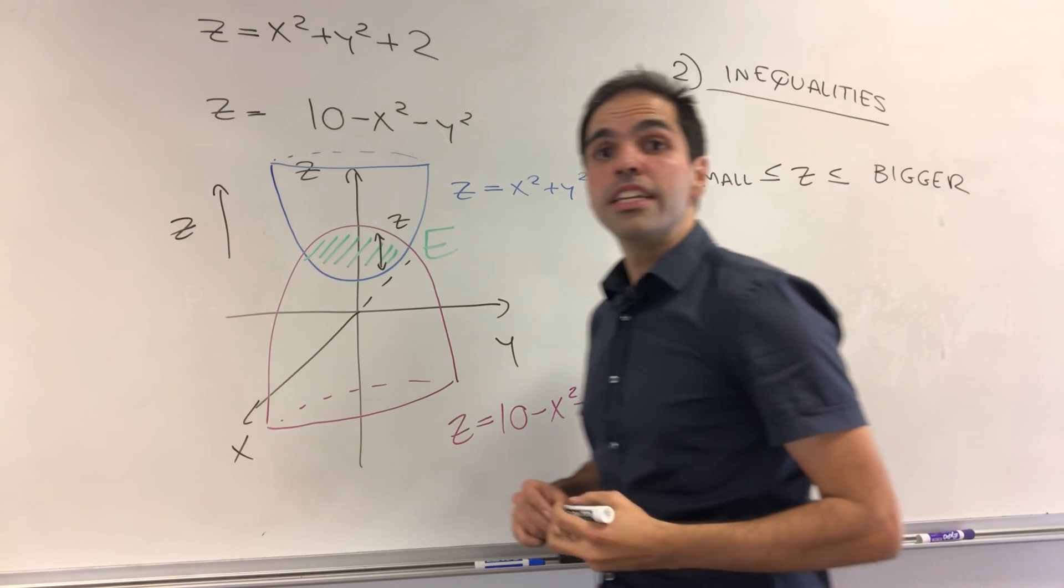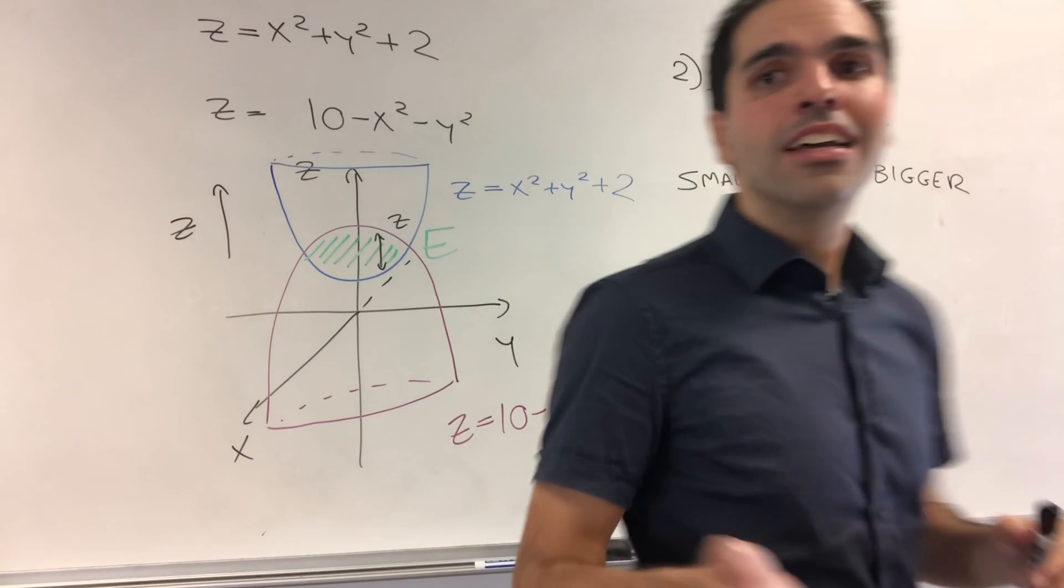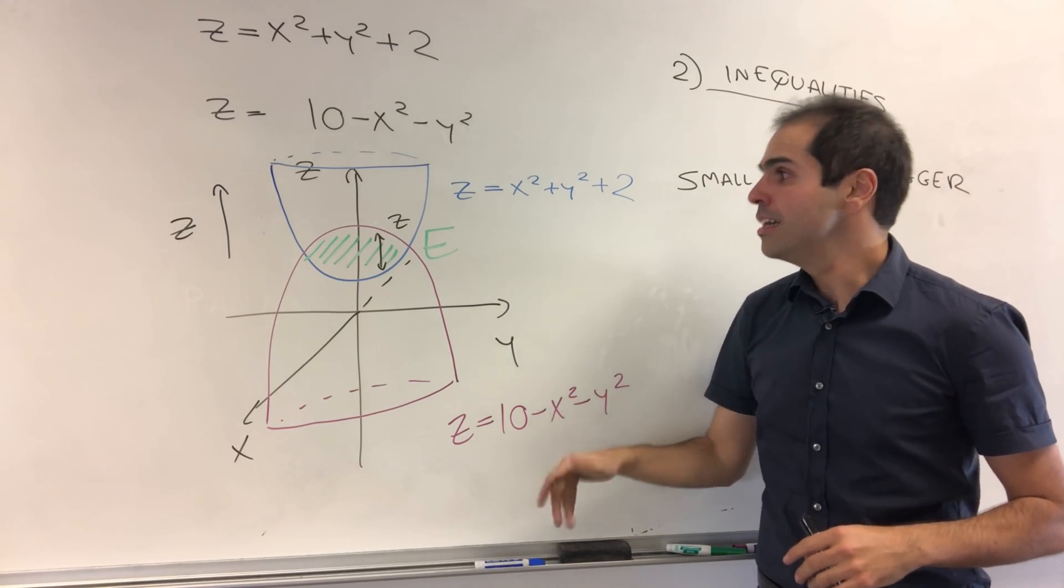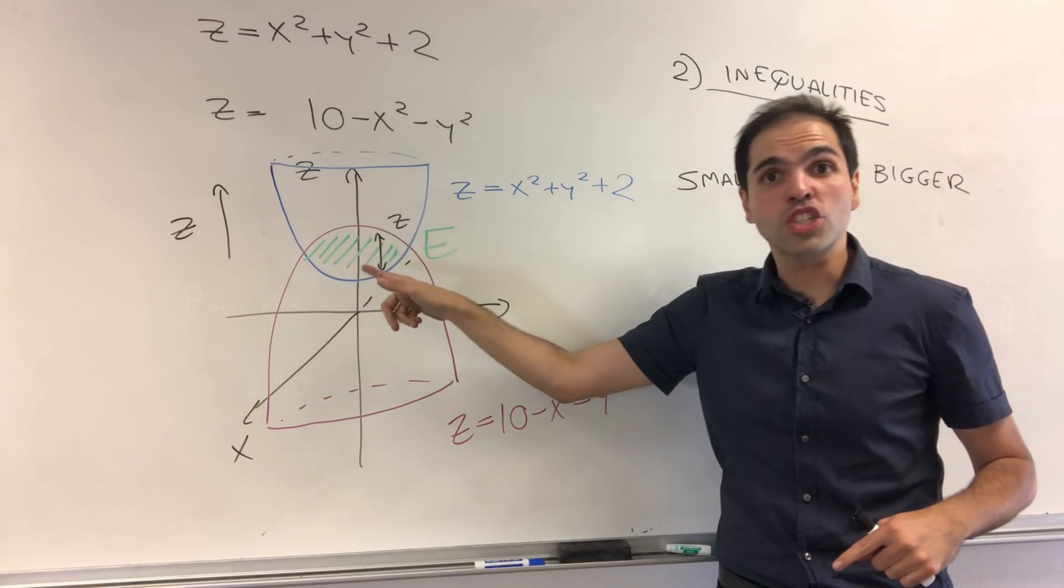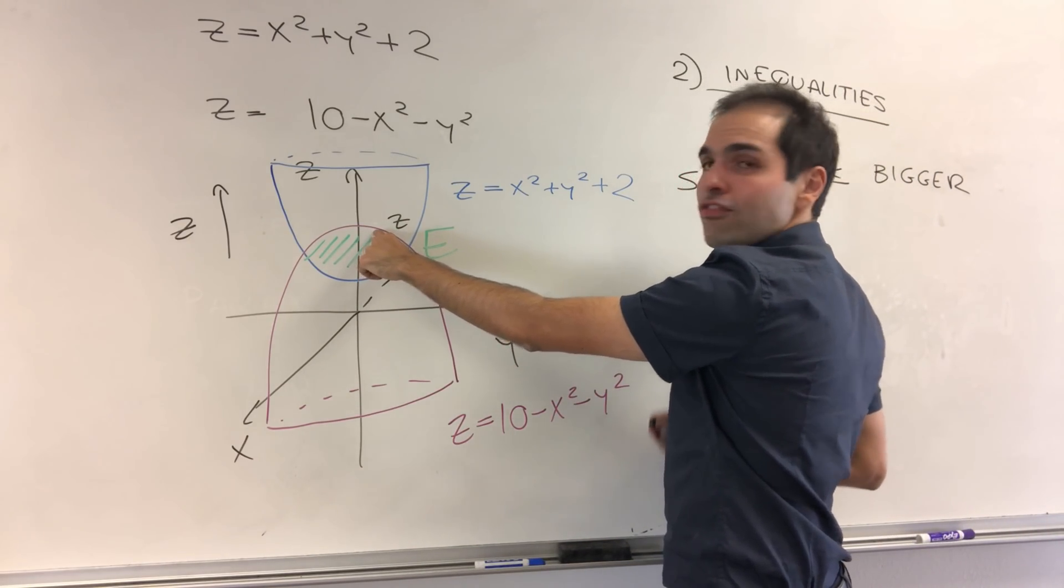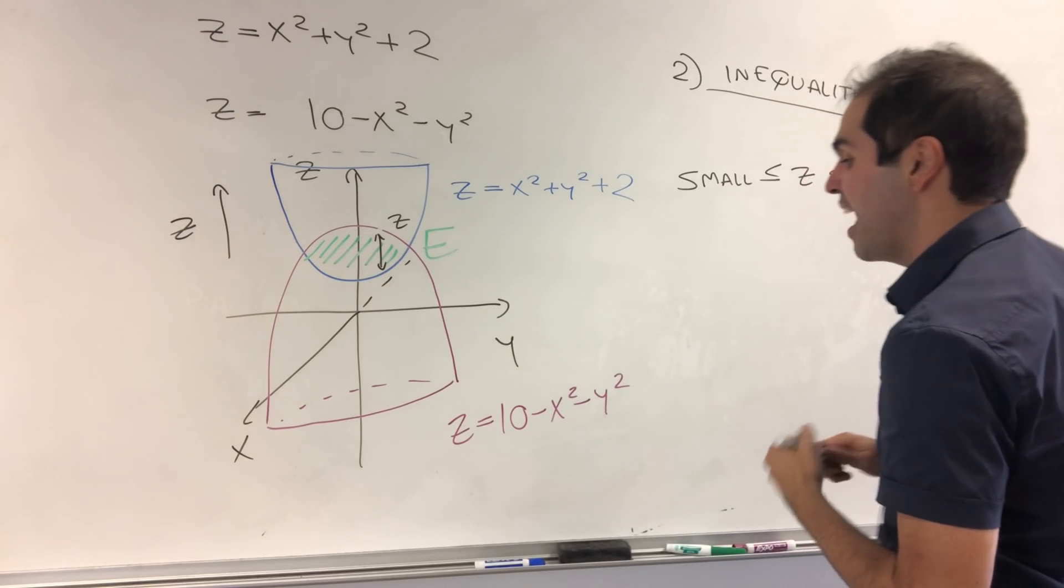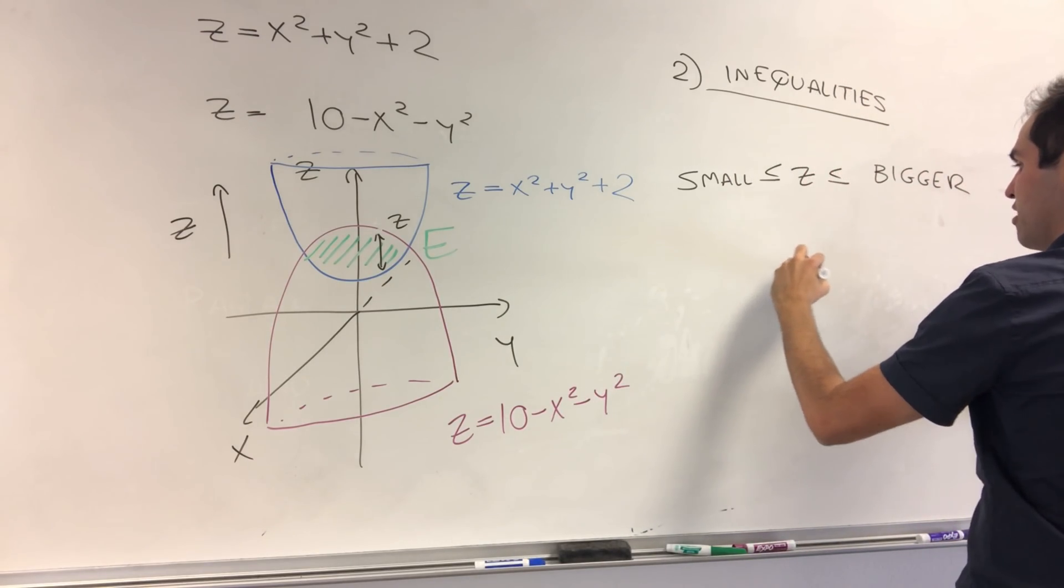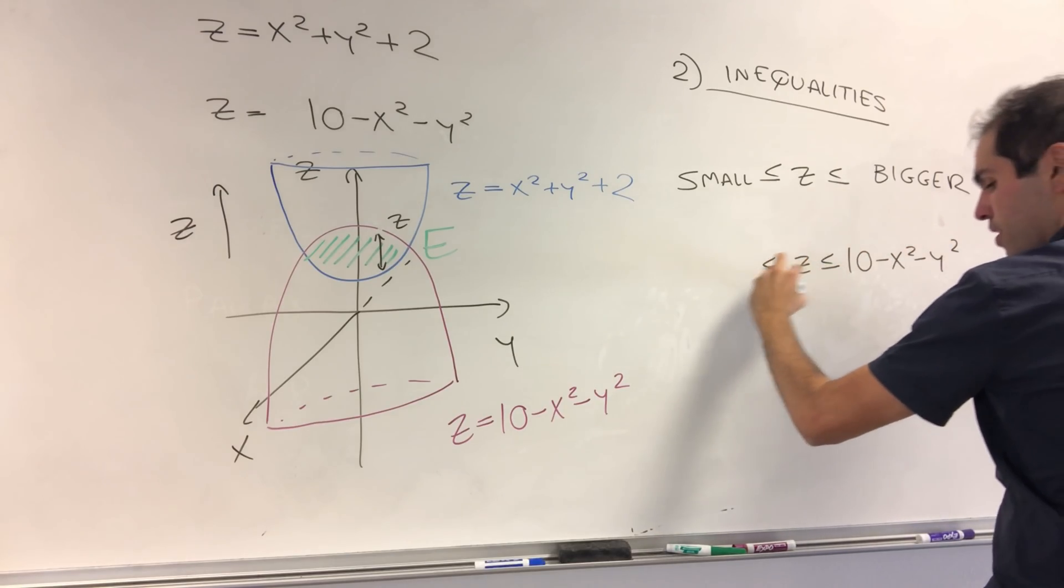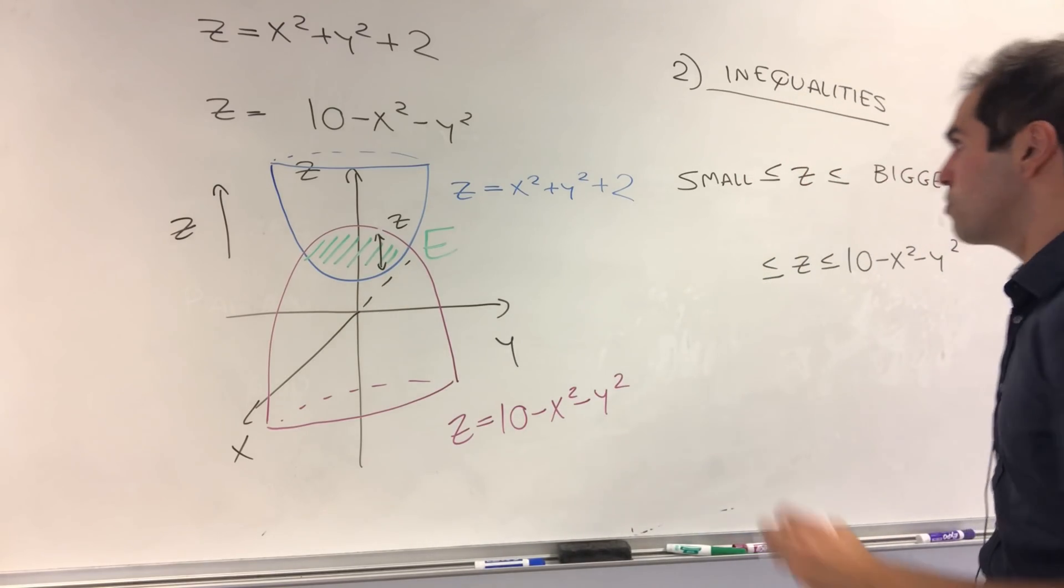And the question is, what is the smaller function and what is the bigger function? Usually it's hard to determine just purely with the formula, but here is where our picture and our colors help. Because the bigger function here is the function in red, and the function in red is precisely 10 minus x squared minus y squared. And the smaller function is the one in blue, which is x squared plus y squared plus 2.